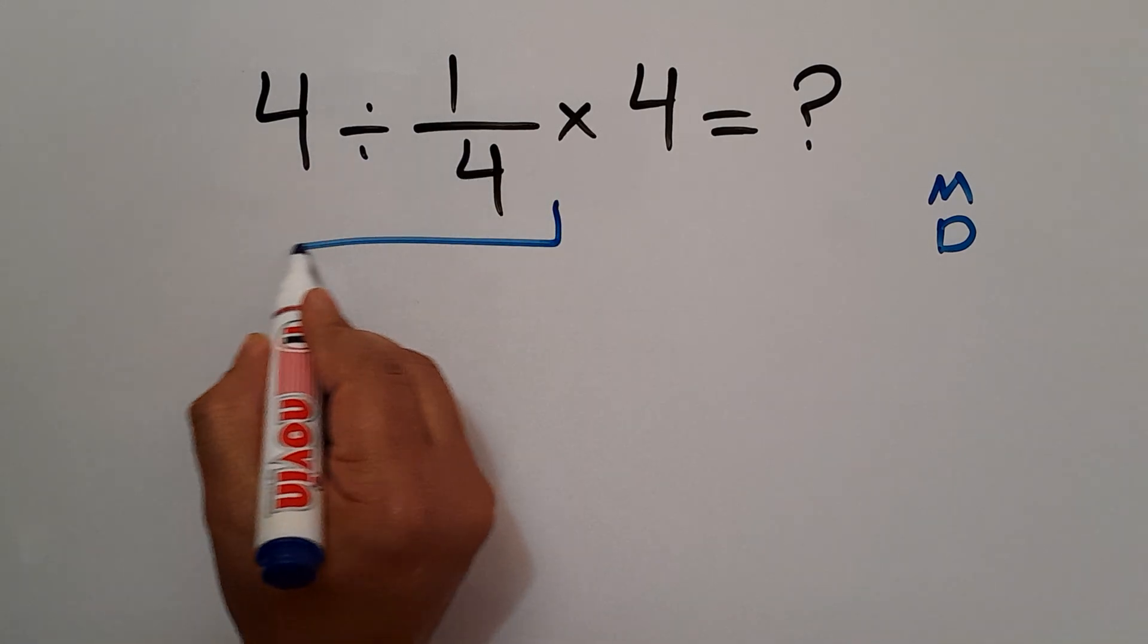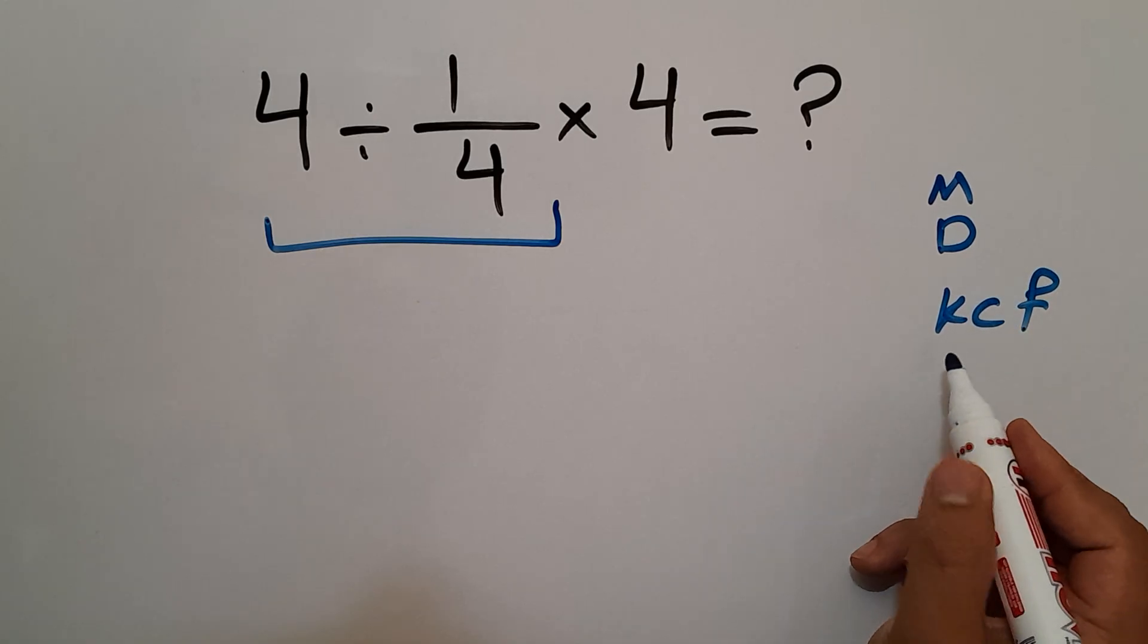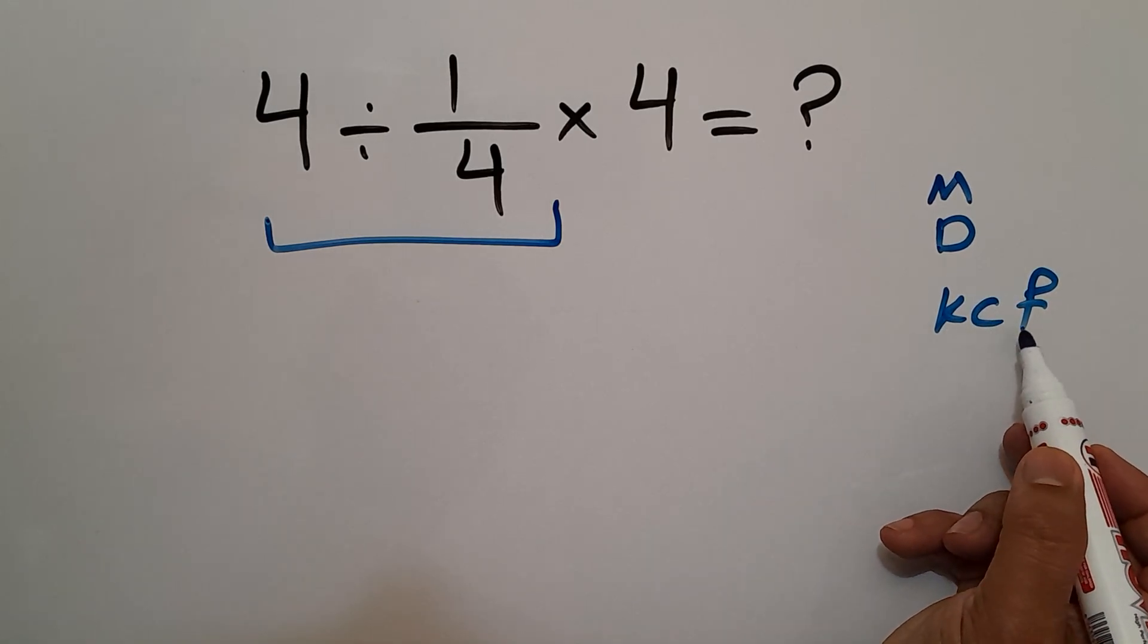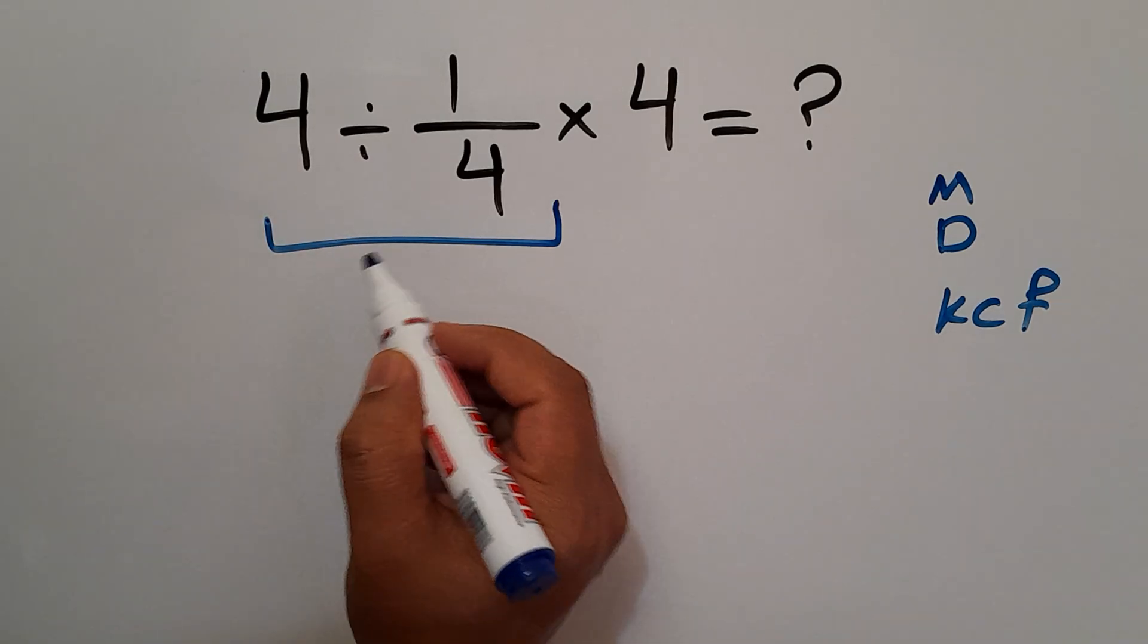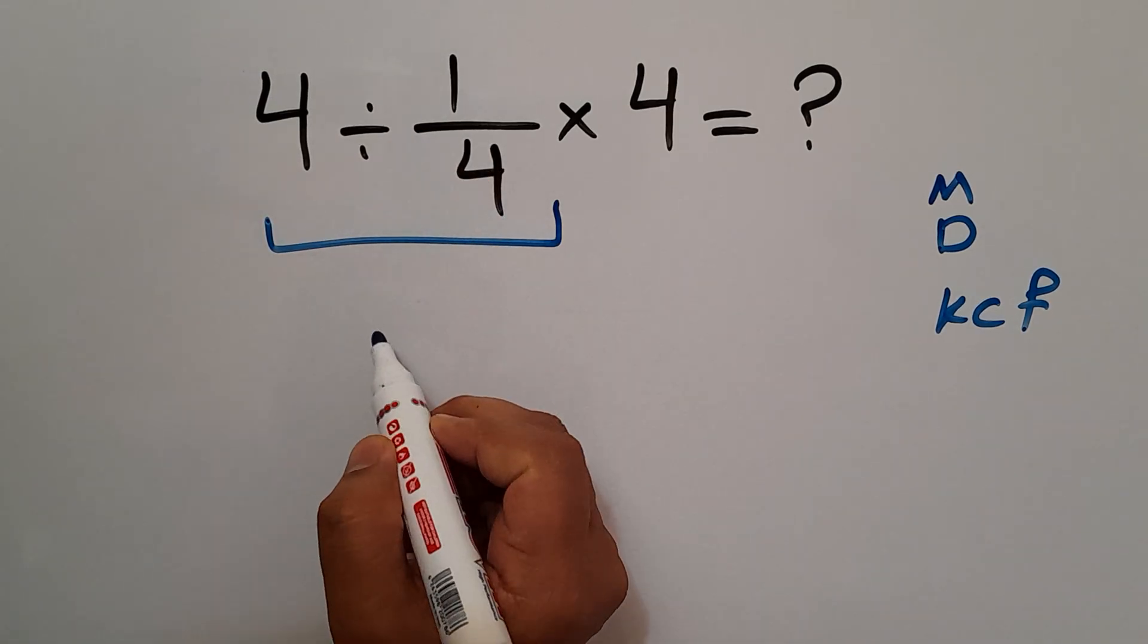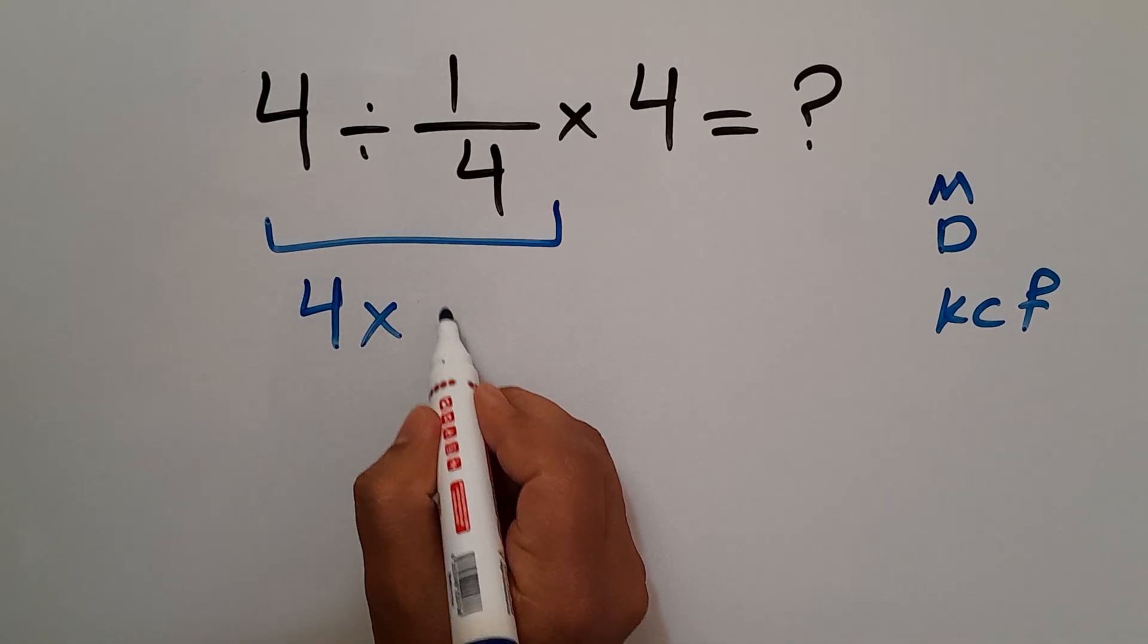According to the KCF rule, K stands for keep, C stands for change, and F stands for flip. Keep the first fraction, change division to multiplication, and flip the second fraction. So we can write 4 times 4, and again we have here times 4.